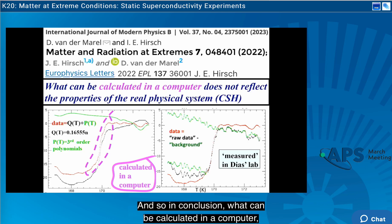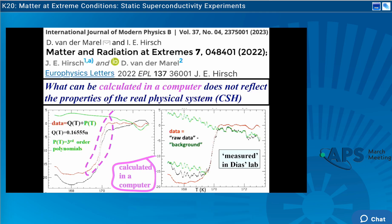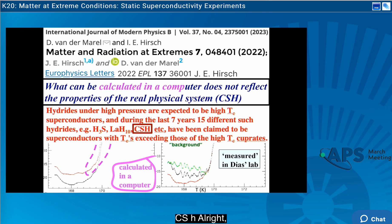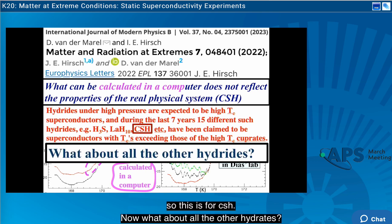And we show this in the work that is published in these three papers. And so in conclusion, what can be calculated in a computer we think does not reflect the properties of a real physical system, CSH. All right, so this is for CSH. Now, what about all the other hydrides?